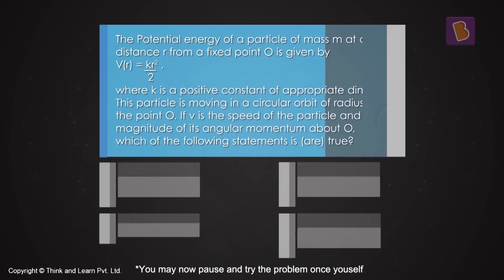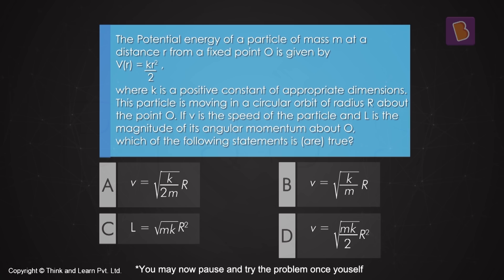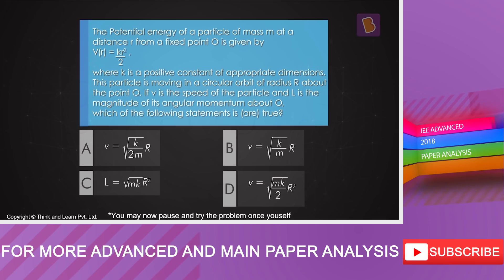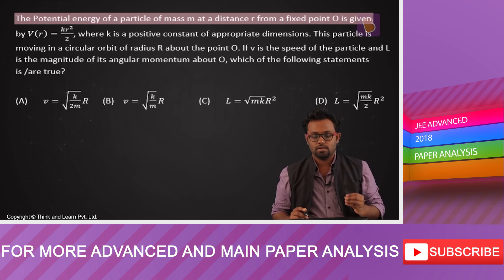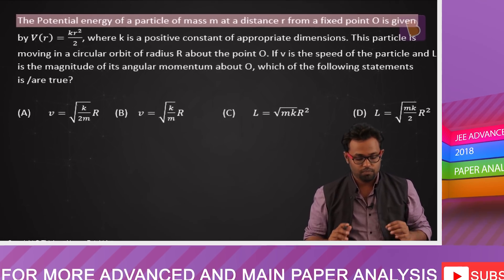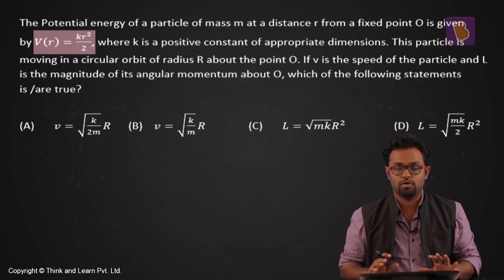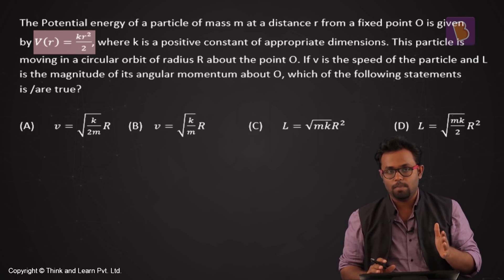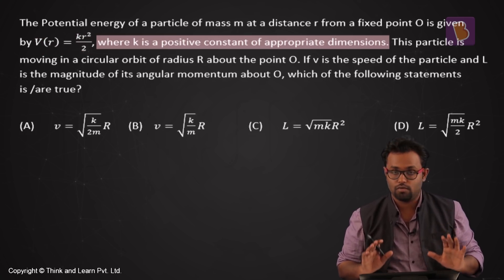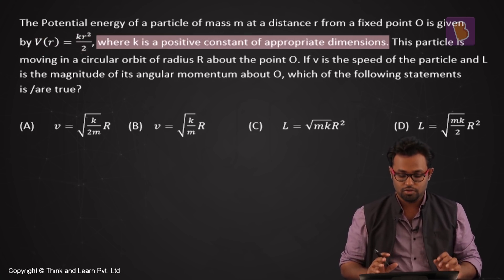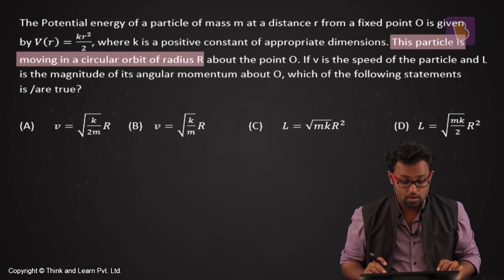The basic objective of this video is to see how to solve problems quickly in JEE. The first question reads: the potential energy of a particle of mass m at a distance r from a fixed point O is given by V(r) = kr²/2, where k is a positive constant of appropriate dimensions.